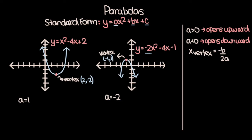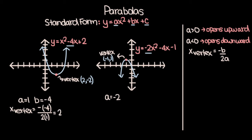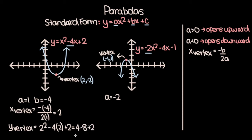Let's work through that process with our two examples. For the parabola on the left, a is equal to 1 and b, the coefficient of the x term, is negative 4. The x-coordinate of the vertex is negative b over 2a: negative of negative 4 divided by 2 times 1, which gives us 4 divided by 2, so the x-coordinate is 2. To get the y-value, we plug x equals 2 into the equation: 2 squared minus 4 times 2 plus 2 equals 4 minus 8 plus 2, which is negative 2. So the vertex of this parabola is at the point (2, negative 2).